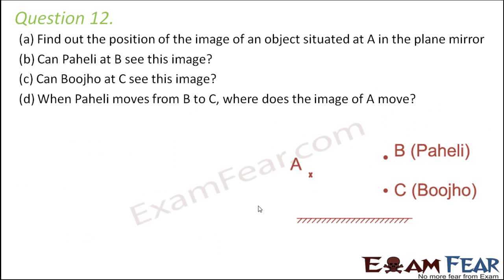Next question: find the position of the image of an object situated at A in the plane mirror. This is object A and this is the plane mirror. In a plane mirror, the image is formed exactly the same size as the object, behind the mirror, at the same distance as the object is from the mirror. So the image should form somewhere here.